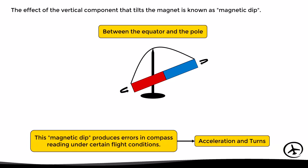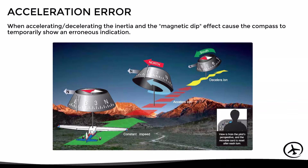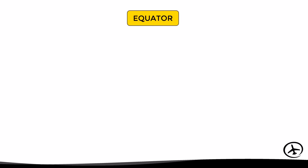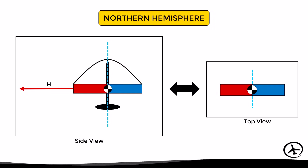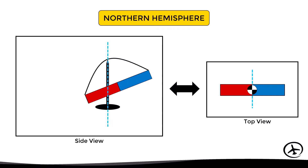In this video we focus on the acceleration error. When accelerating or decelerating, inertia combined with magnetic dip will cause the compass to show an erroneous heading indication temporarily. At the equator the compass is completely balanced — the center of gravity of the magnet is aligned with the pivot point, so the compass reading will not be affected by acceleration or deceleration. However, in the northern hemisphere the magnet tilts due to magnetic dip, and the center of gravity is no longer aligned with the pivot point. Viewed from the top, the center of gravity shifts to the blue side.